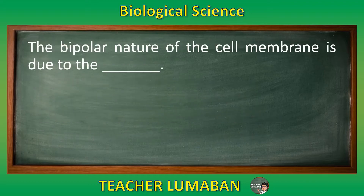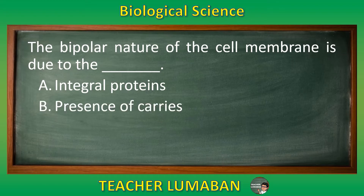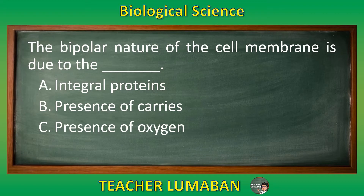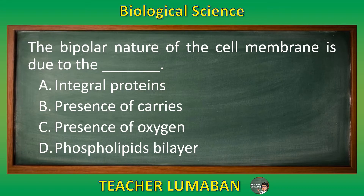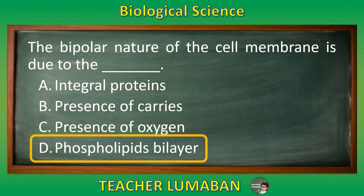The bipolar nature of the cell membrane is due to the blank. Letter A: integral proteins. Letter B: presence of caries. Letter C: presence of oxygen. Letter D: phospholipid bilayer. The correct answer is letter D, phospholipid bilayer. The bipolar nature of the cell membrane is due to the phospholipid bilayer.